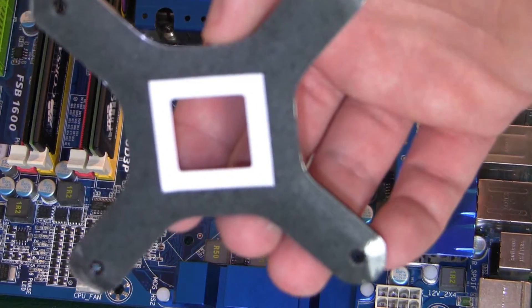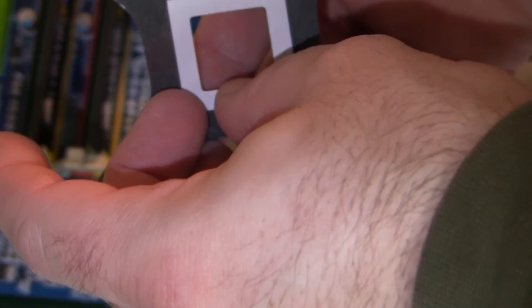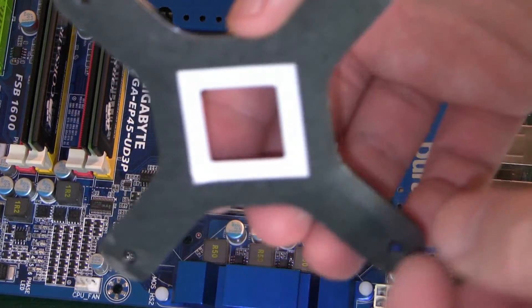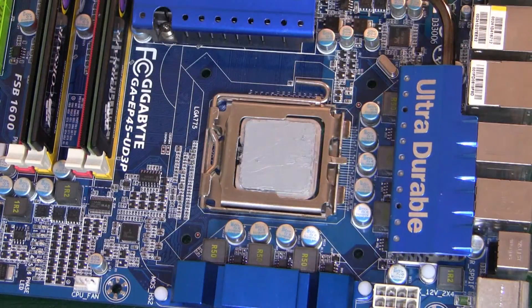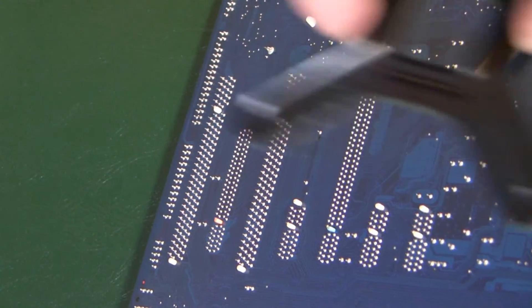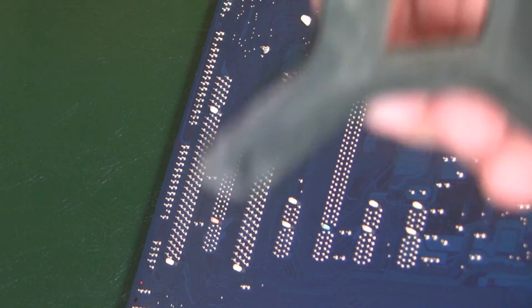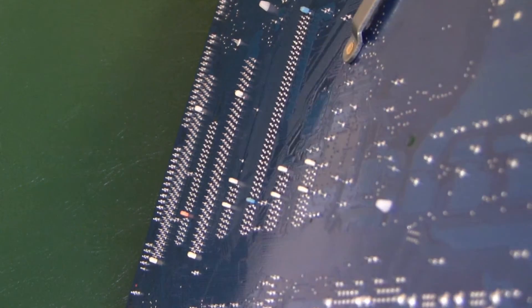On the back of the bracket, there's a white backing. You'll want to remove that white backing. Flip your motherboard around and line up the holes in the bracket to the holes on the motherboard.